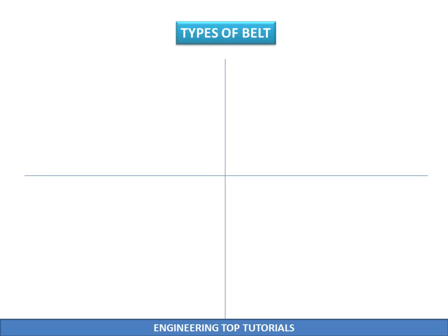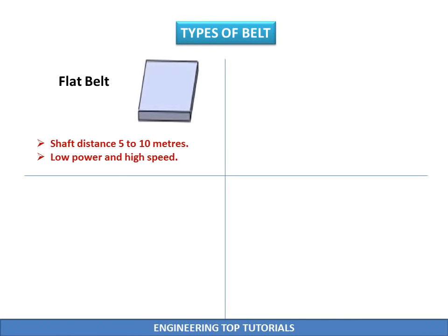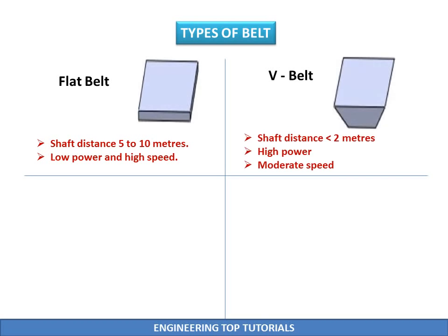Types of belt: Flat belts are used where the shaft distance is 5–10 meters and low power is required at high speed. V belts are used where shaft distance is less than 2 meters and high power is required at moderate speed.